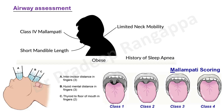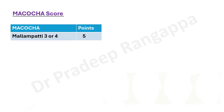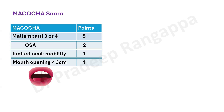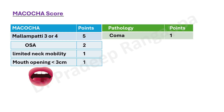The widely accepted score is the MACOCHA score. Mallampati 3 or 4 gets 5 points — the maximum. OSA gets 2 points, limited neck mobility gets 1 point, and mouth opening less than 3 centimeters also gets 1 point. Simplistically, limited neck mobility and OSA — if someone is on CPAP, anticipate difficult intubation — and Mallampati 3 or 4 garners the highest points. There are also points related to patient pathology in the ICU setting.